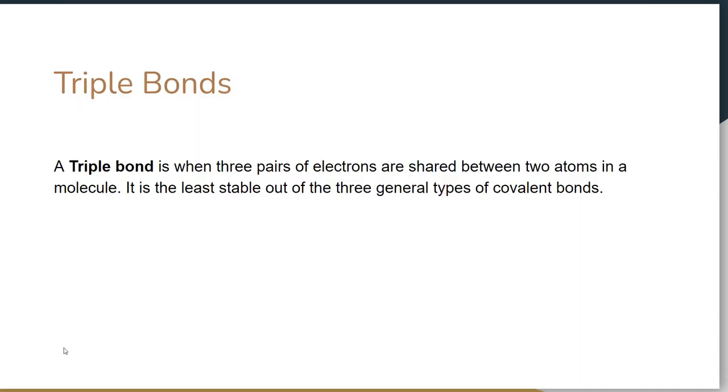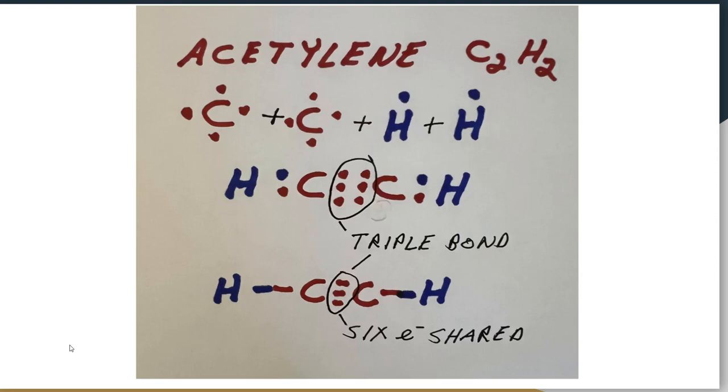You can probably guess that the next one's going to be a triple bond, so three pairs of electrons are shared. It is the least stable of the three general types of covalent bonds. A good example of this is acetylene C2H2. Hydrogen wants to gain one, carbon wants to gain four. When you put these two together, you can see there's a triple bond between the two carbons and then a single bond between each carbon and a hydrogen. When you draw these models, they're going to rearrange themselves to fulfill the octet rule for each particular atom. Each carbon now has eight and each hydrogen has two.